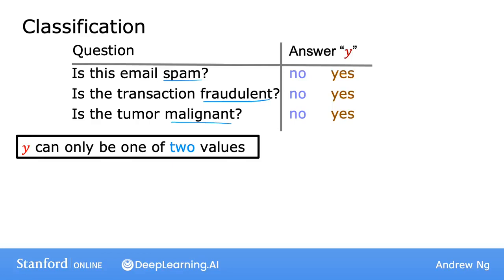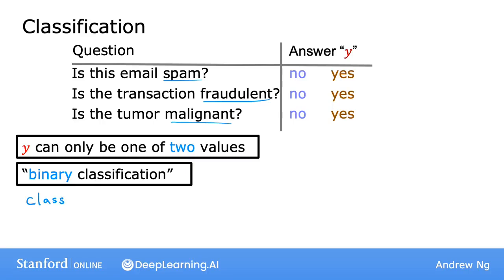This type of classification problem, where there are only two possible outputs, is called binary classification, where the word binary refers to there being only two possible classes, or two possible categories. In these problems, I will use the terms class and category relatively interchangeably. They mean basically the same thing.